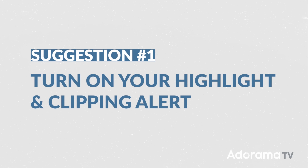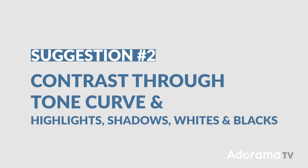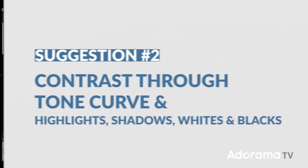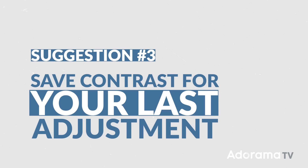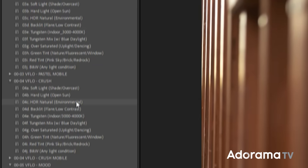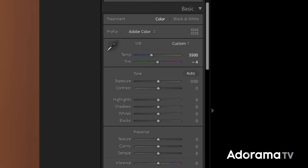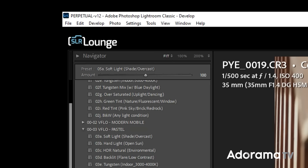A couple of suggestions here. First, turn on the highlight and clipping alert — if you're in Lightroom Classic, press J to do this. Second, I like to find my contrast through a combination of the tone curve and highlights, shadows, whites, and blacks. Next, save contrast for the last and final adjustment to an image. If you're using presets like Visual Flow, we actually do just that — we leave contrast zeroed out on most presets, and you have the amount slider for intensity control.